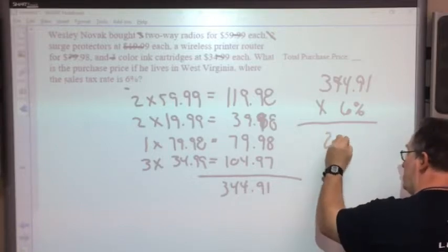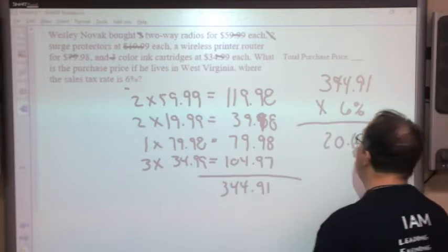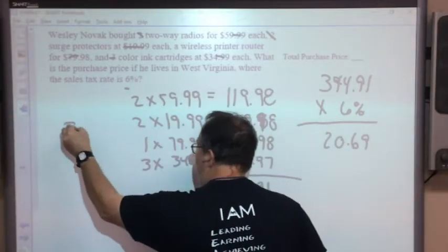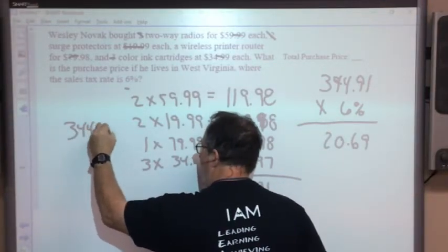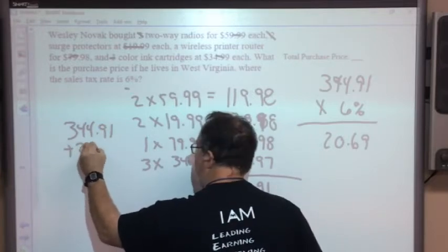If your calculator will not do sales tax, it's going to be converted to a decimal, which is 0.06. So my total sales tax is going to be $20.69.